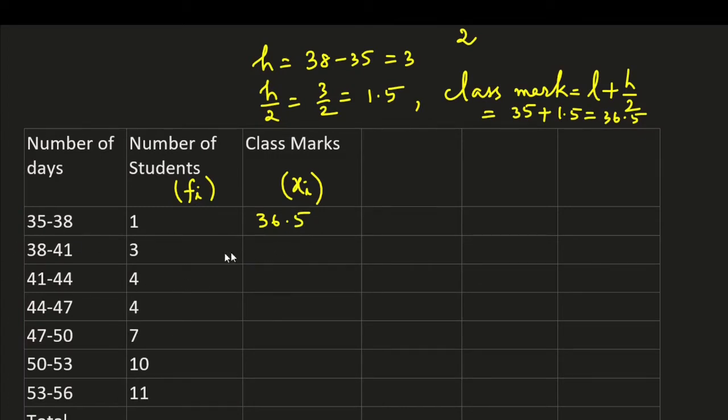So here for the second one, 38 plus 1.5. Half of class size is 1.5. So it is 39.5. Here it is 42.5. Here 45.5. Here 48.5. 51.5. 54.5. These are the class marks.